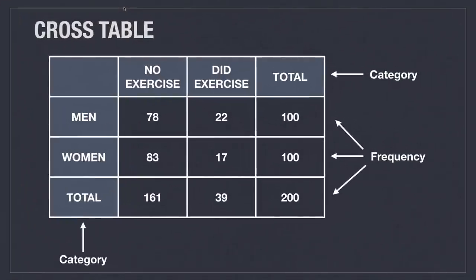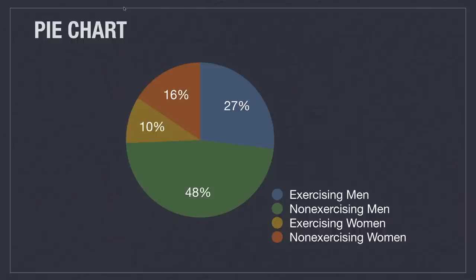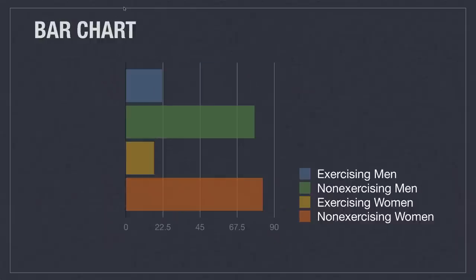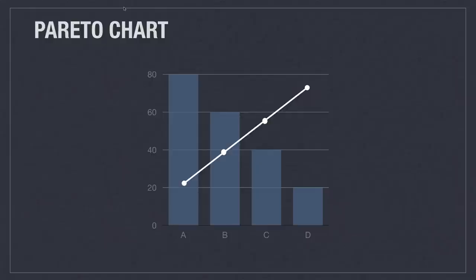There are many different ways to visualize data. This is what we call a cross table, and it shows relationships between rows and columns of data. Frequency shows how often something happens. Here we can see that when we sampled 100 random men, 78 were men that did not exercise. With pie charts, each slice represents a category and the size of the slice represents its frequency, and it must always equal 100%. Bar charts have bars that represent the categories, and the bar's length represents the frequency. Pareto charts list categories in descending order and include a line that represents the cumulative frequency, or the sum of all frequencies that preceded.